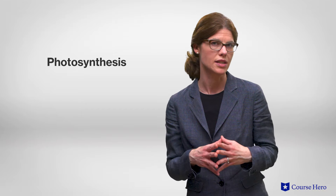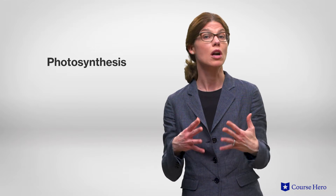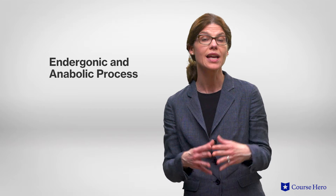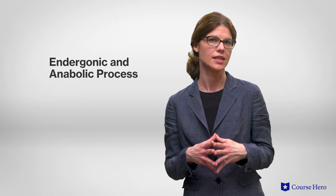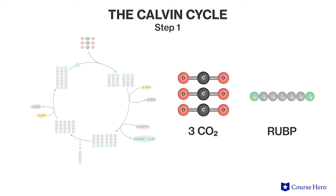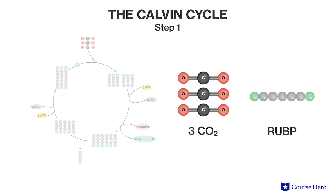The Calvin cycle is the light-independent stage of photosynthesis and is used to build carbohydrates. This stage takes in energy to build molecules, so it is an example of an endergonic and anabolic process. The Calvin cycle, which takes place after energy from the sun has been captured and converted to ATP, is catalyzed by an enzyme called rubisco.